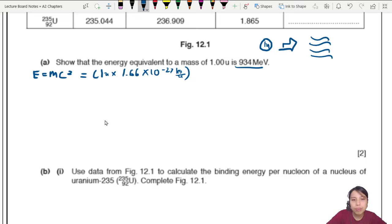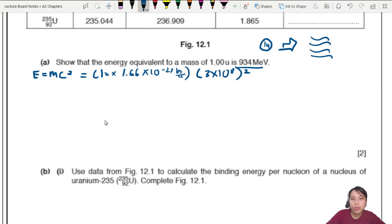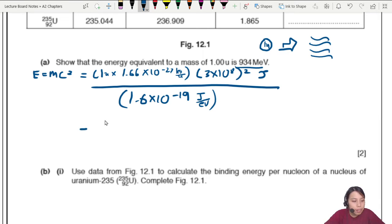One u equals 1.66 × 10⁻²⁷ kg per u. That mass is multiplied by the speed of light squared, (3 × 10⁸)². This gives us energy in joules. To convert to eV, we divide by 1.6 × 10⁻¹⁹ joules per electron volt, so the joules cancel out and you get eV.